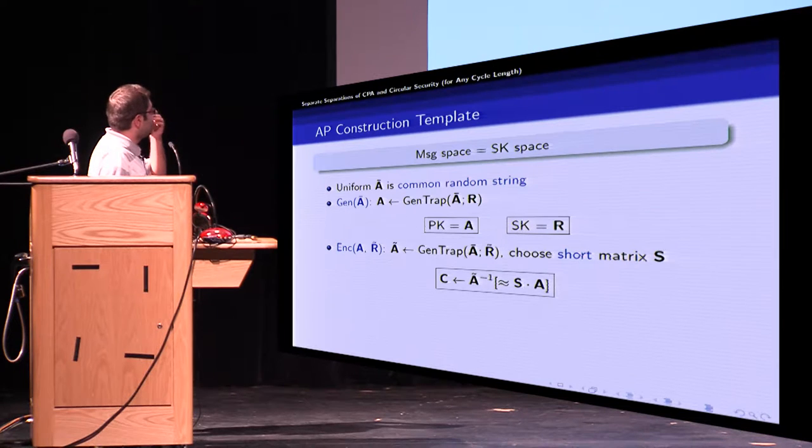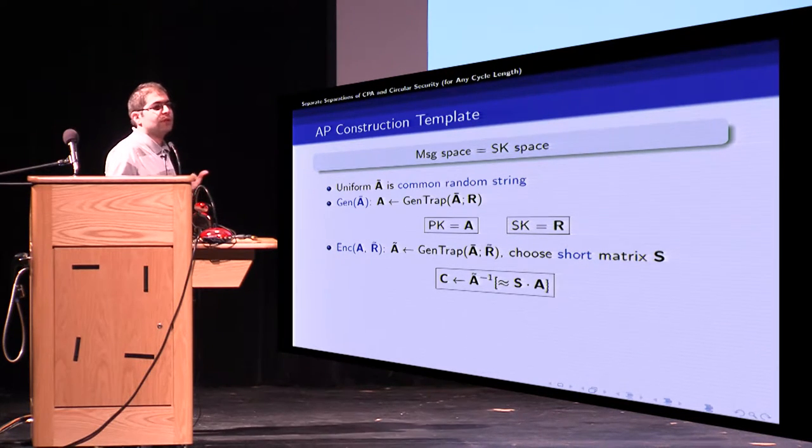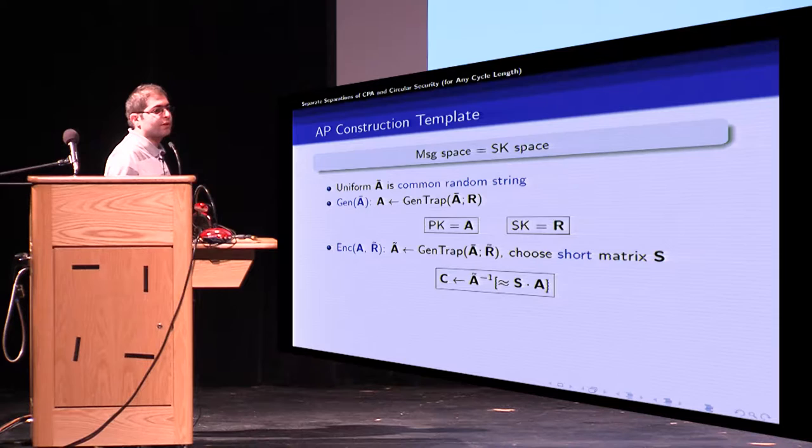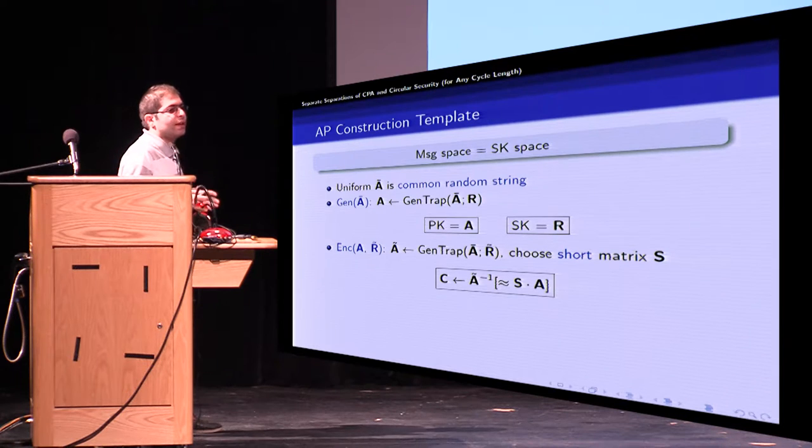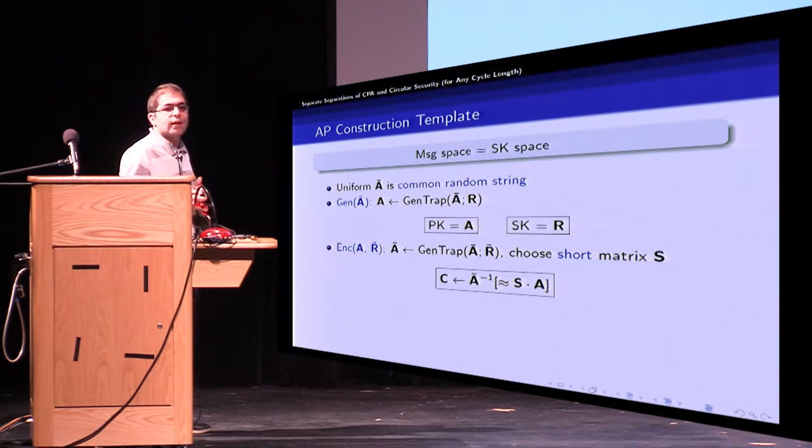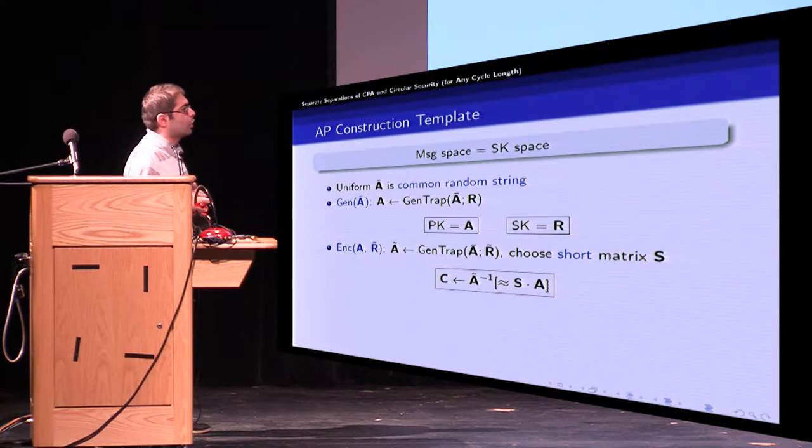Encryption algorithm is more interesting. To encrypt a message which we viewed as a trapdoor under public key A, we run GenTrap on A bar and message to get the matrix A tilde and then we choose a short matrix S. So the ciphertext would be A tilde inverse of noisy SA or we can view it as Gaussian preimage of LWE sample for which S is short secret.